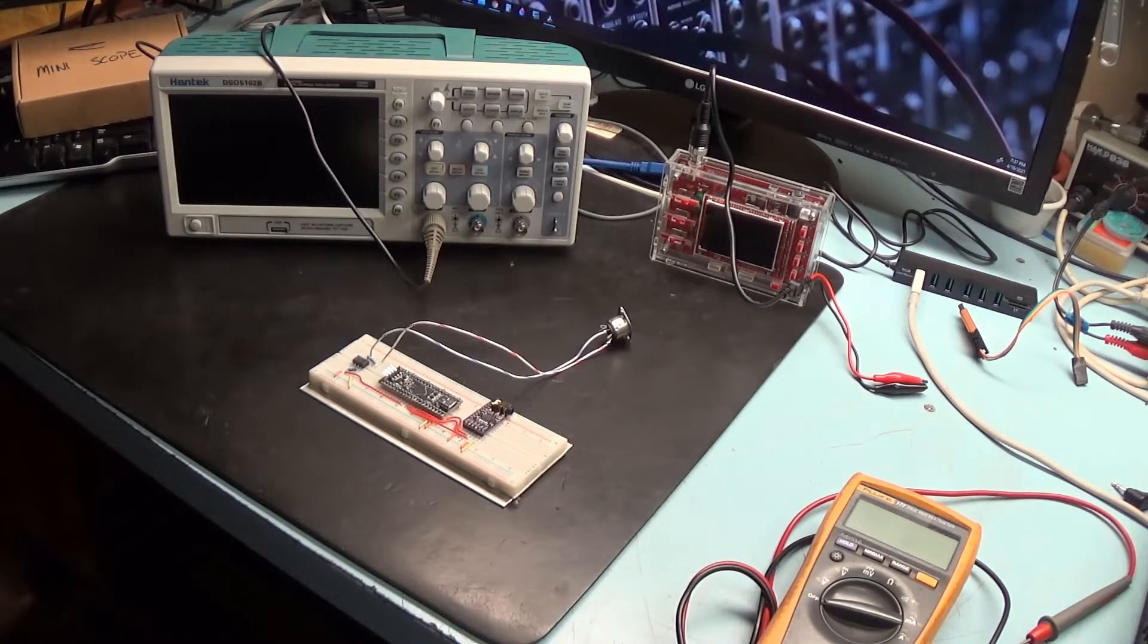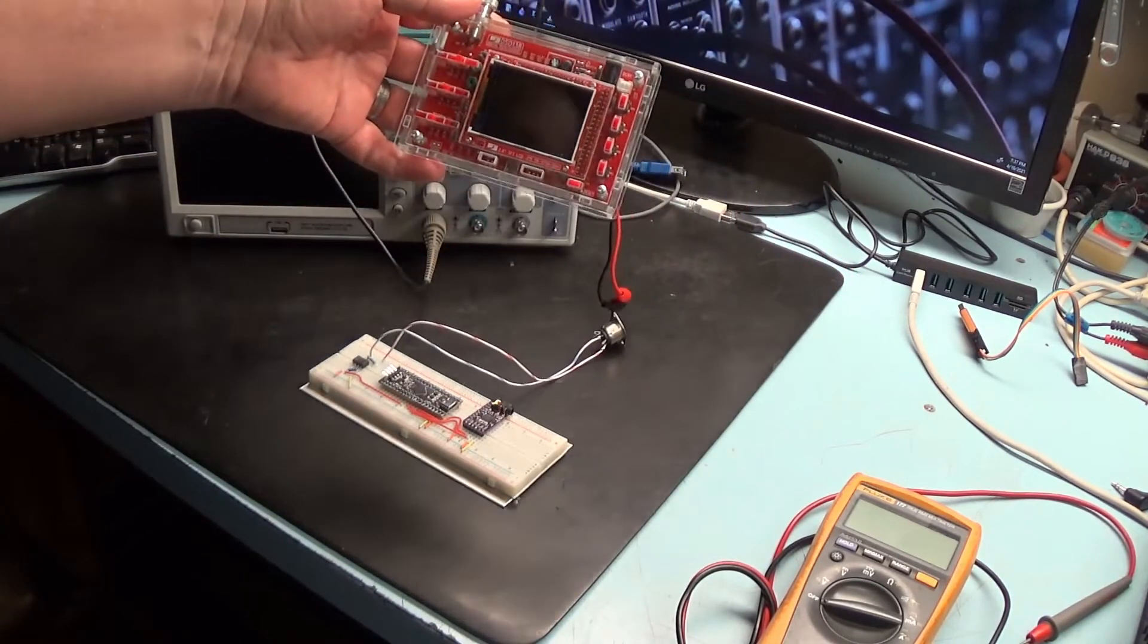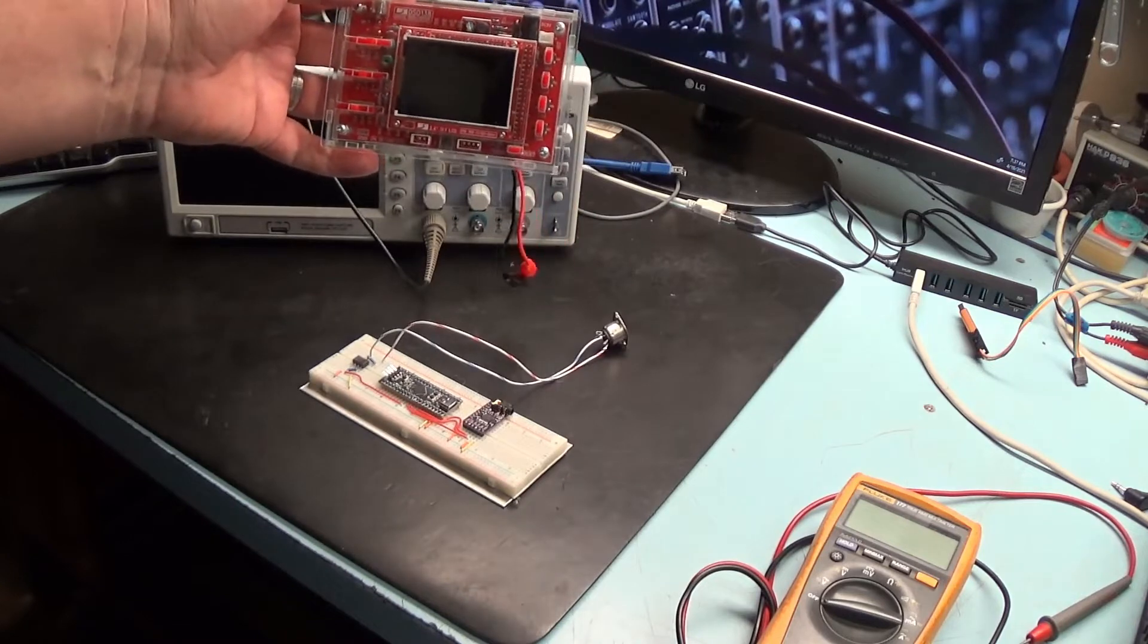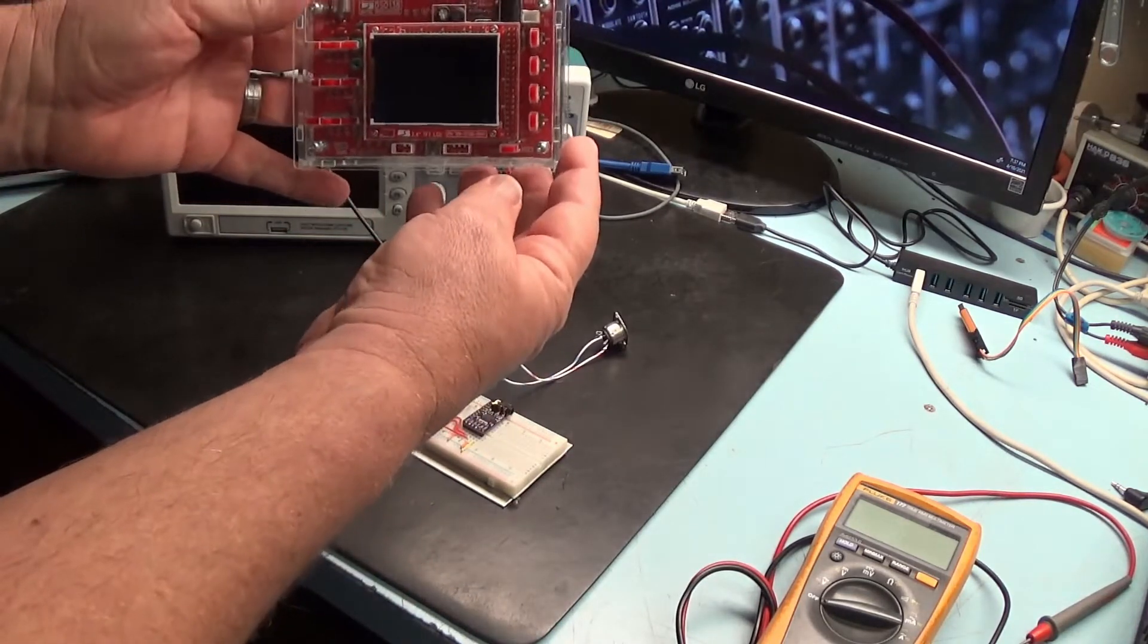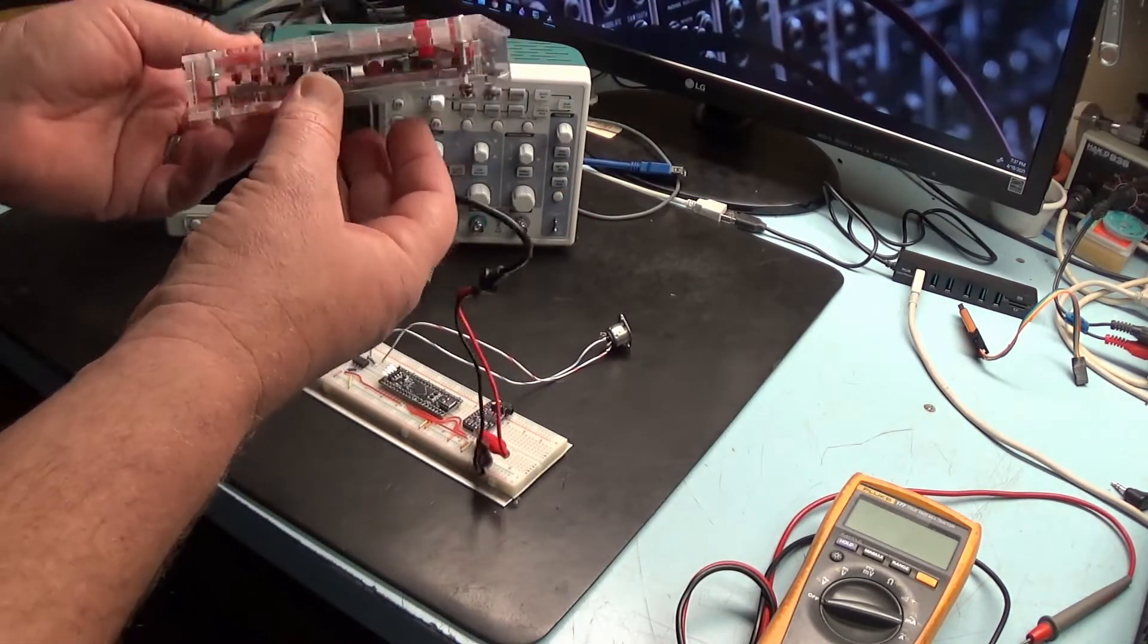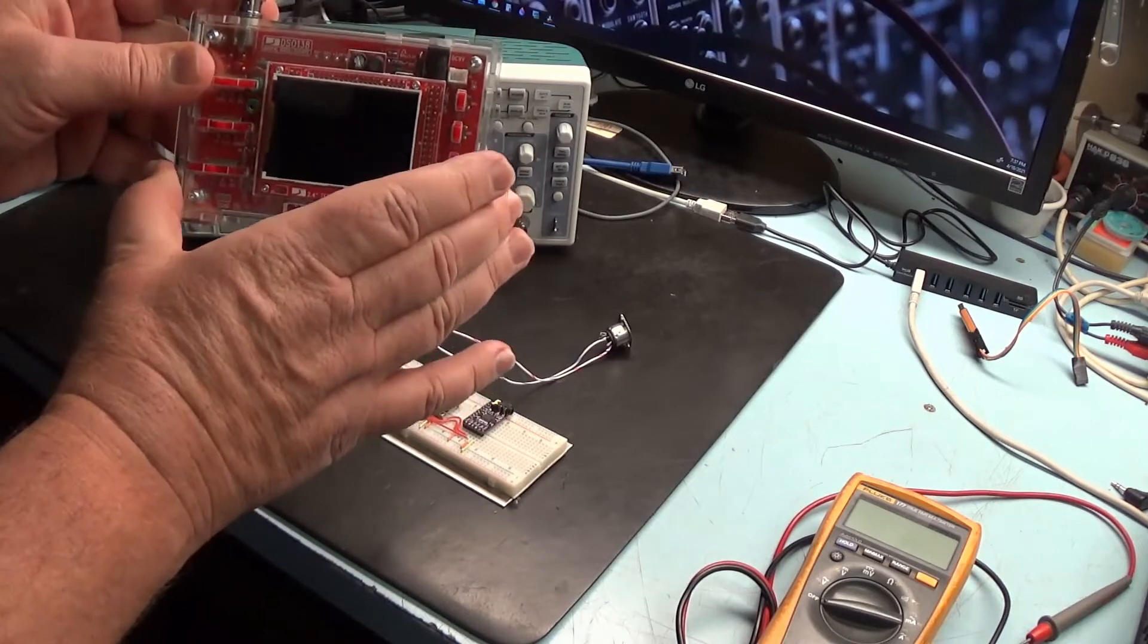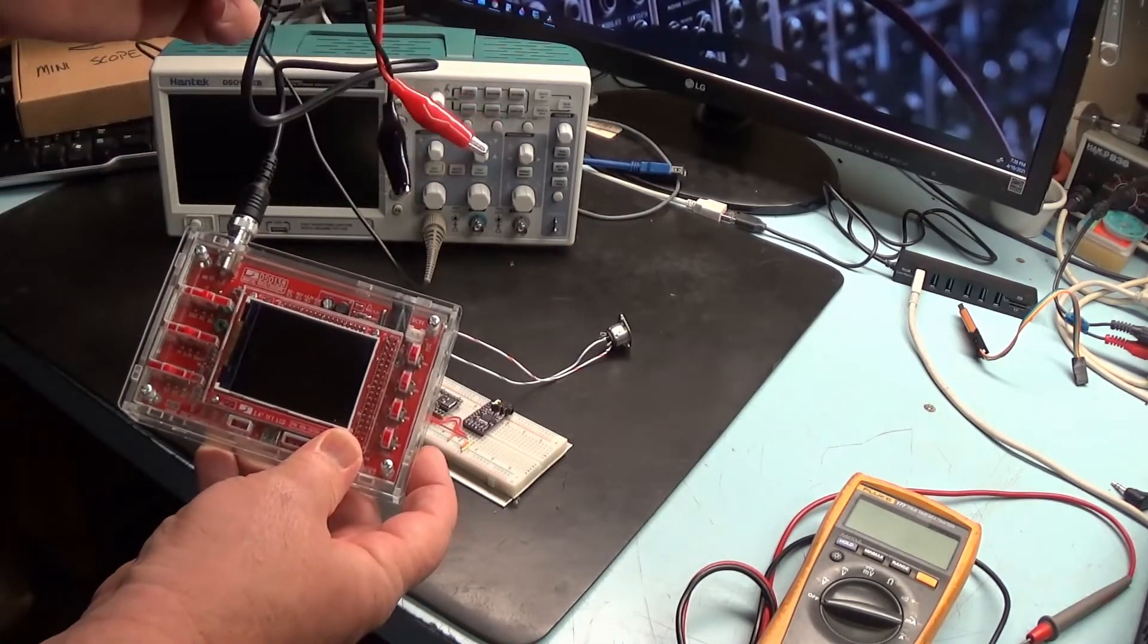Now what a lot of people may have is this guy right here. This is the DSO-138 oscilloscope and for about twenty dollars you can get a bare bones version of this. This one I actually went ahead and got the case to mount it inside. But for twenty dollars you can get just the board inside of there and the screen and I believe you also get the leads that go with it.